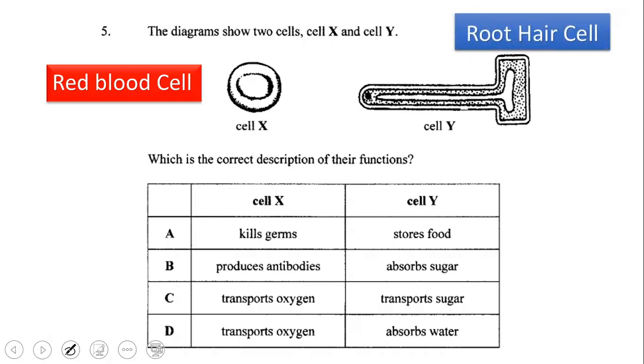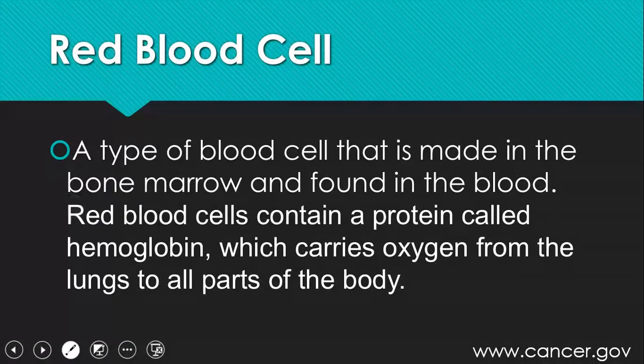But what is a red blood cell? A red blood cell is a type of blood cell that is made in the bone marrow and found in the blood. Red blood cells contain a protein called hemoglobin, which carries oxygen from the lungs to all parts of the body.